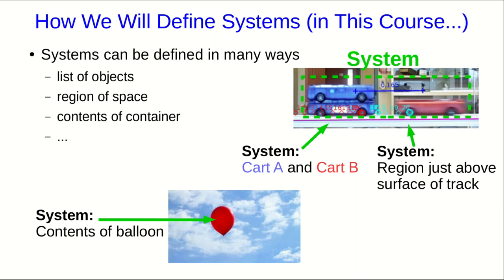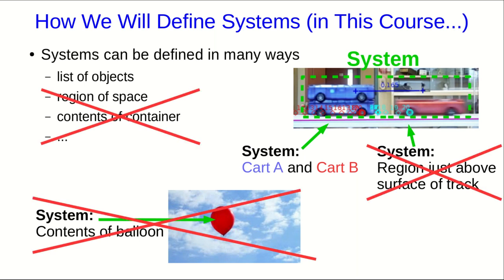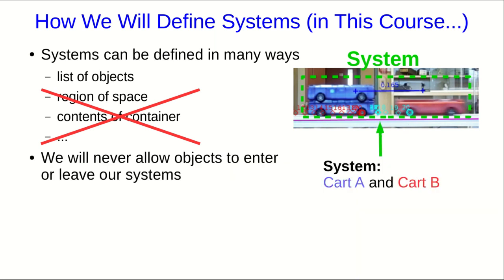However, we're going to keep things simple. In this course, we are always going to define a system as a list of objects, never a region of space or the contents of a container. In particular, the reason for this is that we don't want to ever allow objects to enter or leave our systems. It's not that there's anything wrong with allowing objects to enter or leave a system. However, it does introduce a lot of complications that we are not ready to deal with in this course. You'll probably do it in other courses, though. So in particular, because there's no matter ever going across our system boundary, the total inertia of our system will always be constant.